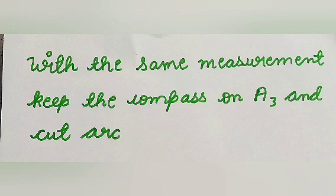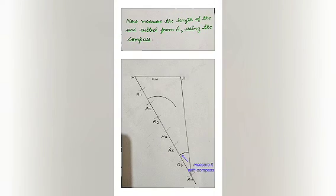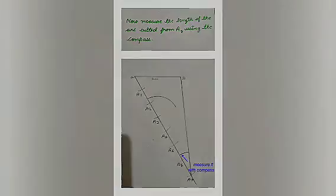Keep the compass on A3 and cut arc because in the ratio the first number is 3. As shown in the figure measure the length of the arc cut from A7 using the compass. Now you can see clearly.